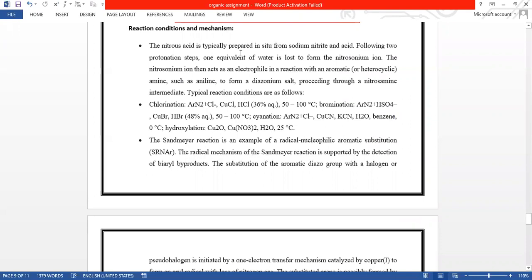What are the condition and mechanism? I'm going to talk about this. The nitrous acid is typically prepared from the sodium nitride acid. Following through a protonation step, one equivalent of water is lost from the nitrosamine ion. And the other is chlorination, bromination, benzene, and hydroxylation. These are the different conditions for different processes which occur through nucleophilic substitution. Different catalysts, different temperatures, different pressure will be exerted on this.